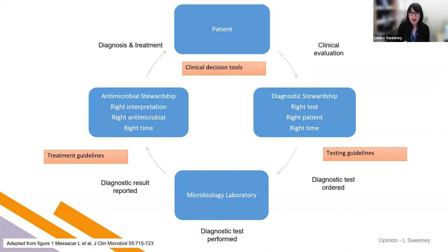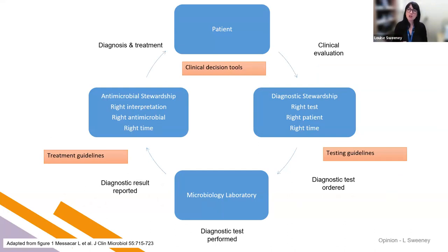Finally, we're going to talk about how we take this information and help in the management of the patient. This is about using diagnostics to ensure appropriate treatment — getting the right samples at the right time on the right patient and performing the right diagnostic tests. Using what we have available, and having the skill set and knowledge to interpret those results and provide timely feedback to clinical colleagues to ensure the patient gets the right antibiotic at the right time. This improves patient outcome and can also be used to ensure we're not overusing broad-spectrum antibiotics.